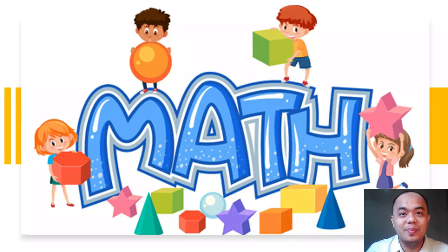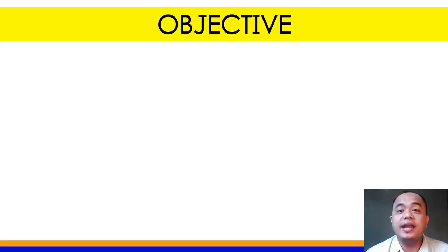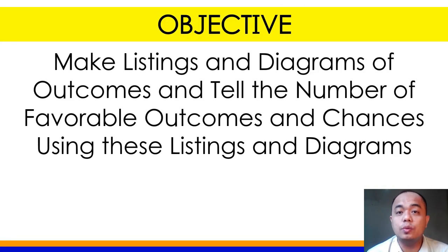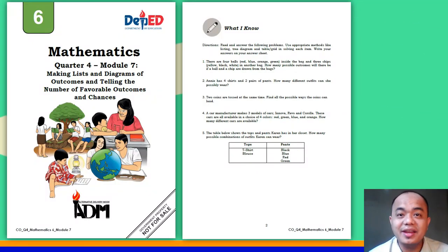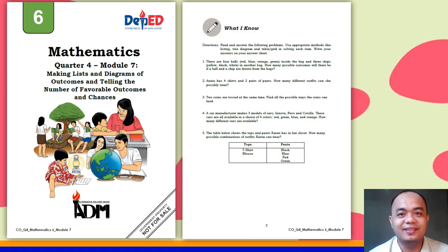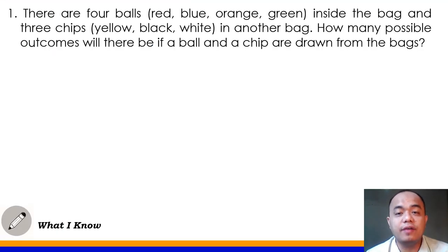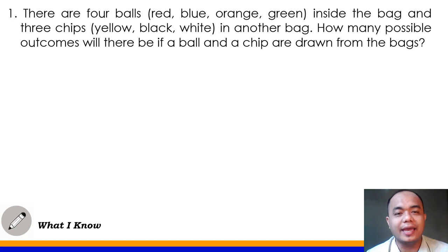Welcome to our Mathematics class! Our objective for this week is to make listings and diagrams of outcomes and tell the number of favorable outcomes and chances using these listings and diagrams. Let us discuss first the What I Know part of your module. Directions: Read and answer the following problems. Use appropriate methods like listing, tree diagram, and table or grid in solving each item.